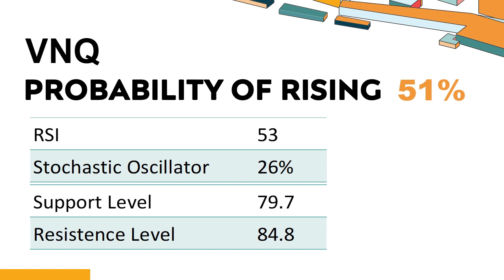The probability of VNQ share price rising is 51%. Combining multiple technical analysis indicators, VNQ has 5 bullish signals and 3 bearish signals. VNQ's short-term support level is 80.3; if it falls below 80.3, it will have a chance to test 79.7. VNQ's short-term resistance level is 83.9; if it breaks through 83.9, it will look up to 84.8.